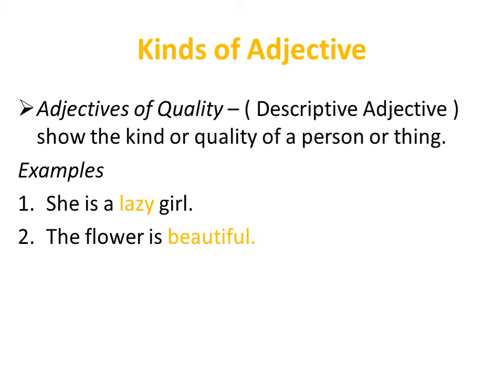'The flower is beautiful.' — which word is telling us quality? Beautiful. 'Don't be a fool.' — which word is telling us quality? Fool. So in these three sentences, the words 'lazy', 'beautiful', and 'fool' are telling us the quality of someone or something. Words that tell us what kind of a person or thing are called adjectives of quality.